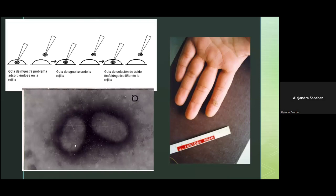A diferencia de la microscopía electrónica de barrido, en la de transmisión las imágenes son planas. El barrido da profundidad de campo; en ocasiones se ve algo tridimensional. Esto no ocurre en transmisión porque se trabaja con cortes que dan imágenes planas. Como ejemplo, se muestra el virus de ectima contagioso, con su formación característica, confirmando que el paciente estaba contagiado.